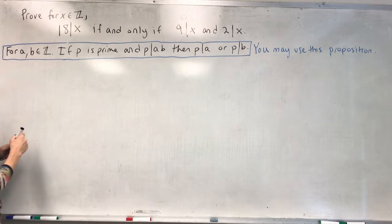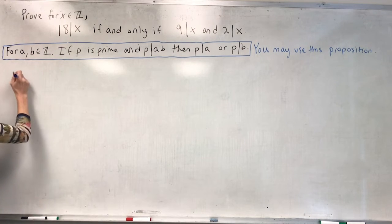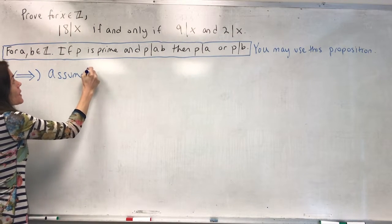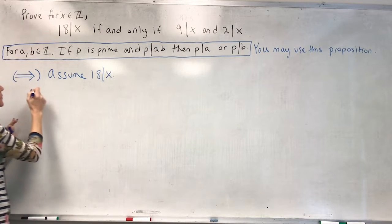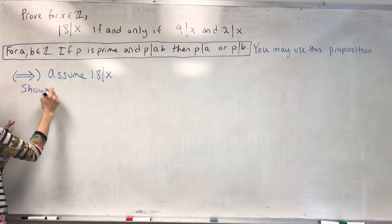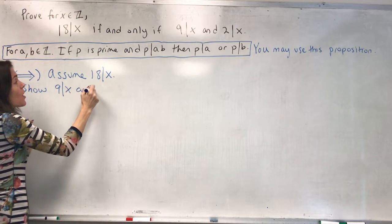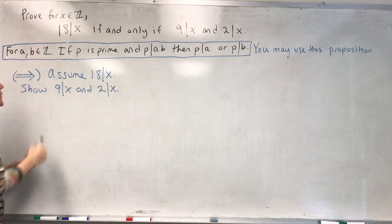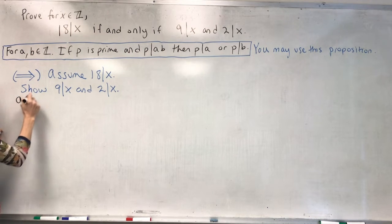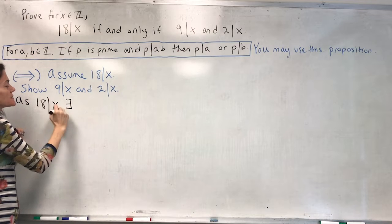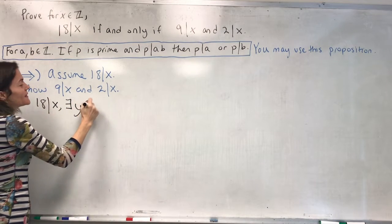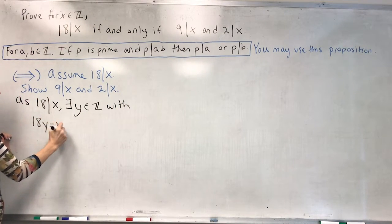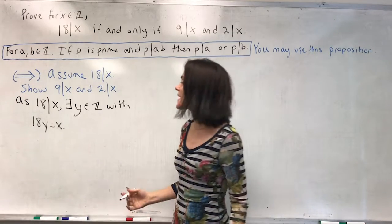The first direction is this way. We assume 18 divides x, and we will show that 9 divides x, and also that 2 divides x. Here we go. 18 divides x means there exists, let's say, y and z with 18y equals x. This is the definition of divides.